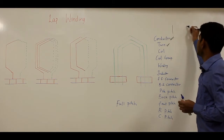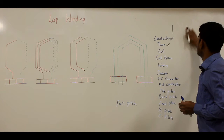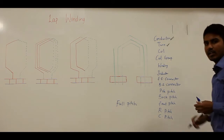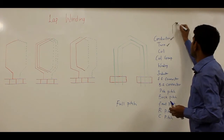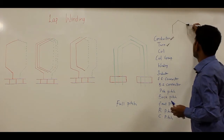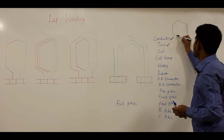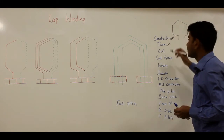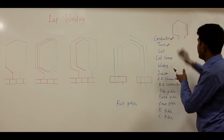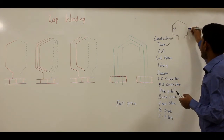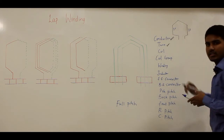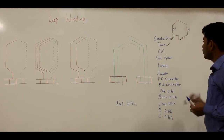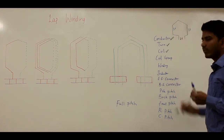Now, if there are two conductors lying in a magnetic field and these two conductors are connected in series, they form a turn, such that their resultant EMF will be double that of an individual conductor. For example, if one volt is induced in each conductor, the resultant EMF will be two volts. So this is your turn.